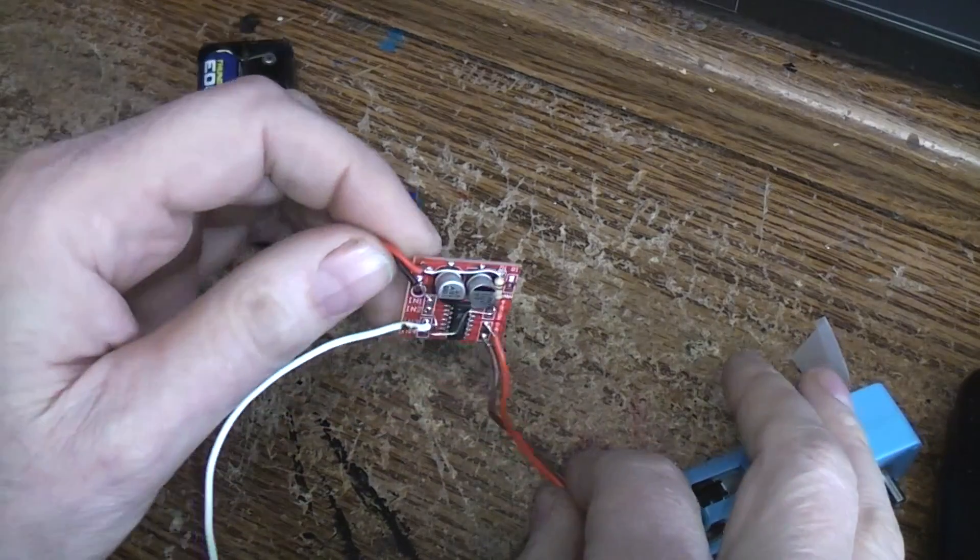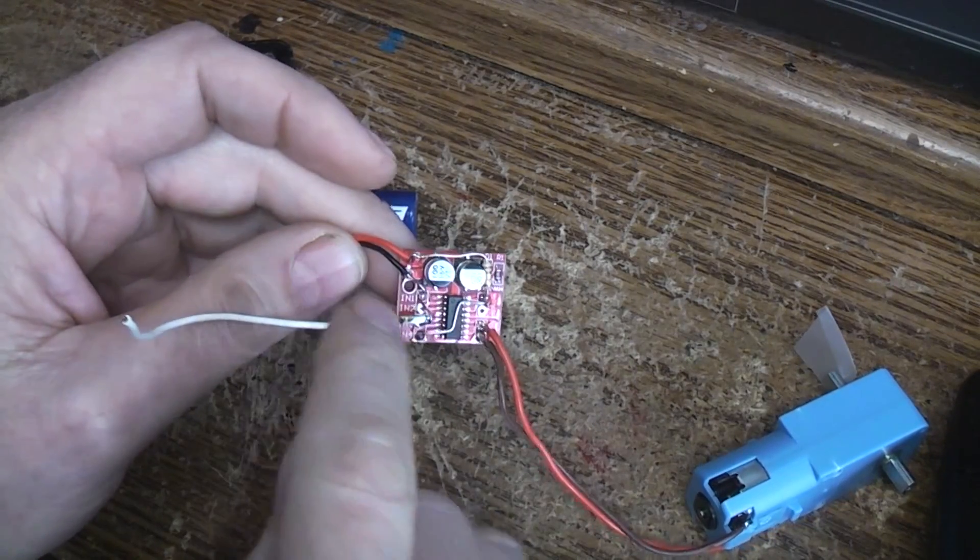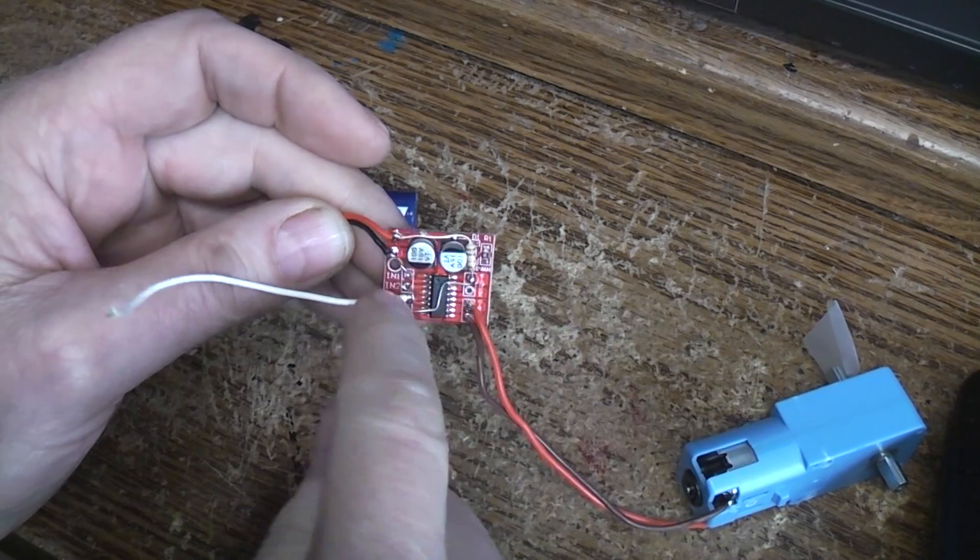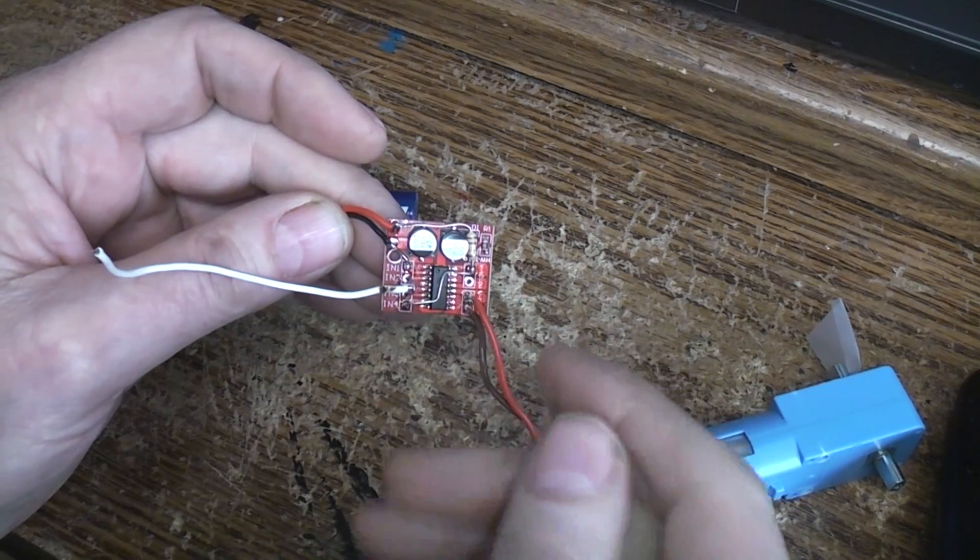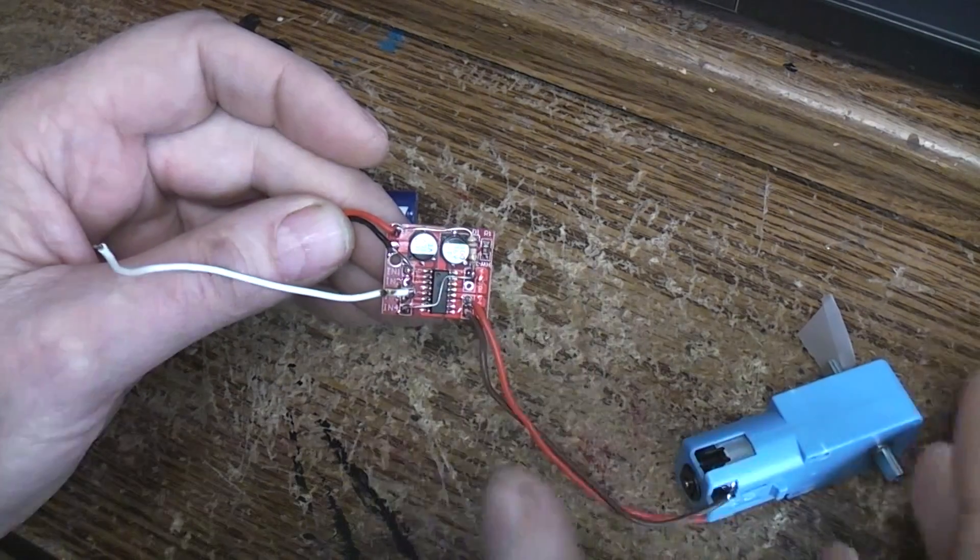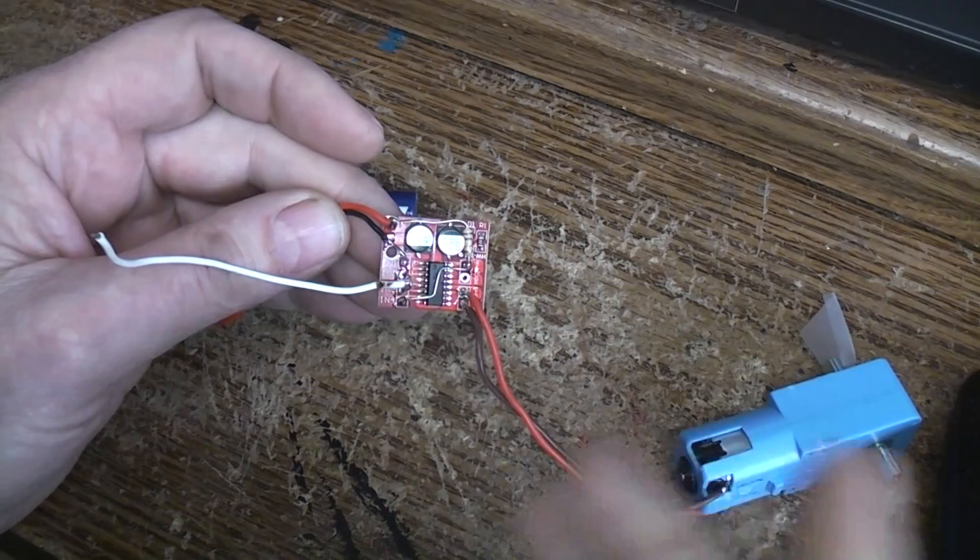Normally something like this you would have two control lines that would control motor A and two control lines that would control motor B, so you can turn the motor on or off, forward and reverse, or lock it in a brake position.